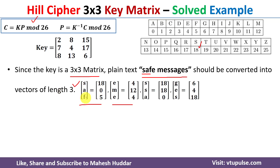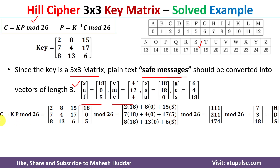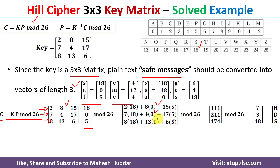For the first vector 'SAF' with values [18, 0, 5], we compute C = K·P mod 26. The first row of K multiplied by the column gives 2×18 + 8×0 + 15×5. The second row gives 7×18 + 4×0 + 17×5. The third row gives 8×18 + 13×0 + 6×5. We then take mod 26 of the results.